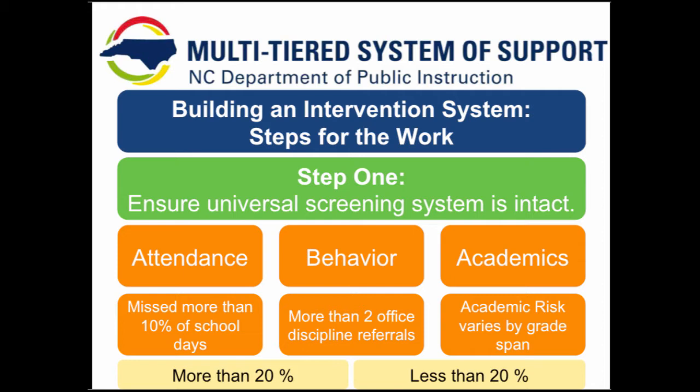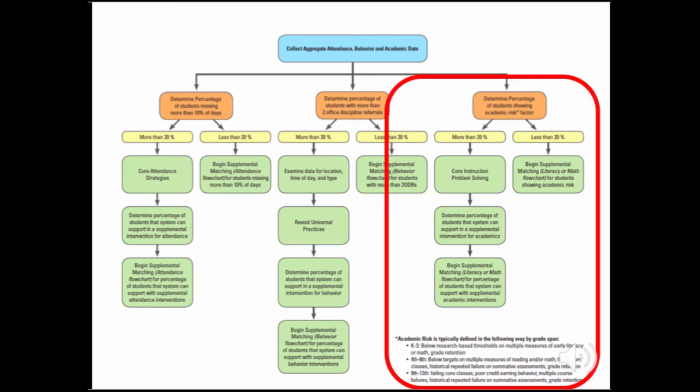For each area, we will customize the next steps based on whether we are meeting the goal of 80% of students responding with core support alone. Do more than 20% or less than 20% of students require supplemental support? In a previous video contained within module 2.2, Susan Laney outlined the steps when examining all areas of the universal screening system — attendance, behavior, and academics. For this short video, we will focus in on the academic area, specifically academic risk.